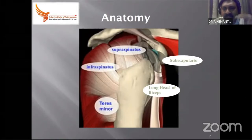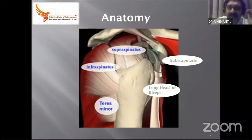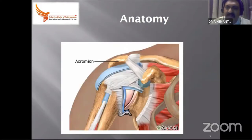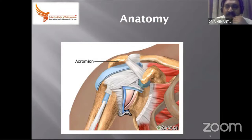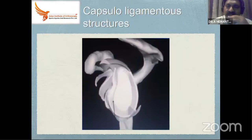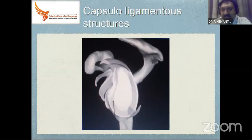The first layer of deltoid has been removed — that is what you see now. Once the cuff is also removed, you can see the capsule, the acromion, the coracoid, the ligamentous structures, and the AC joint. Inside that will be the shoulder joint. When you take out that layer also, you can see what is inside the capsulo-ligamentous structures.